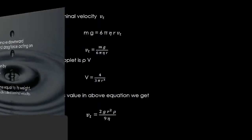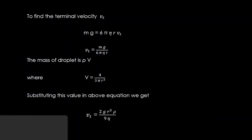To find the terminal velocity when weight becomes equal to drag force: mg = 6πηrvₜ. Terminal velocity vₜ = mg/(6πηr).